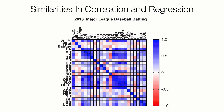Now some similarities. When the correlation is negative, as indicated in red in this Major League Baseball correlation chart, the regression slope is negative. And when the correlation is positive, as indicated in blue, the regression slope is positive.